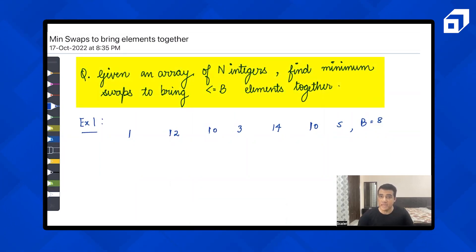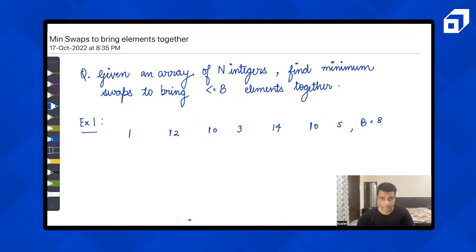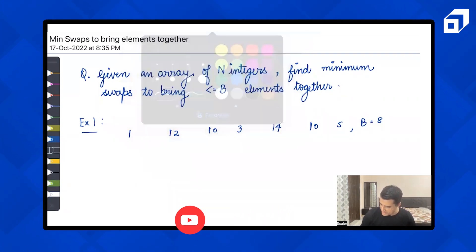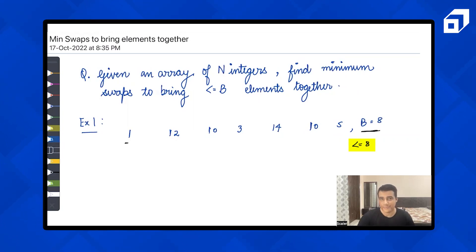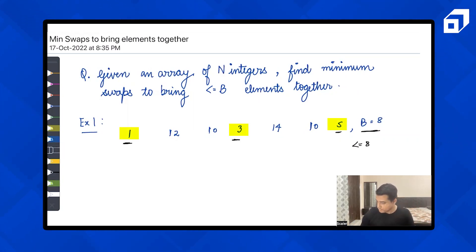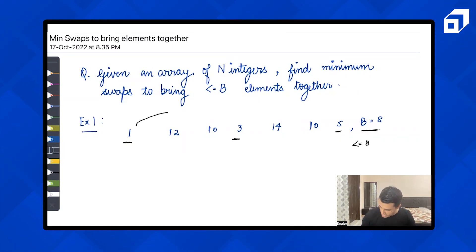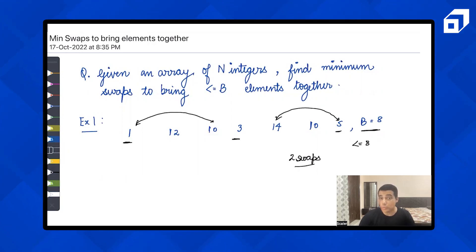The question is: given an array of integers, find the minimum swaps to bring all elements with value less than or equal to b together. For example, consider the array [1, 12, 10, 3, 14, 10, 5] with b equal to 8. The elements to bring together are 1, 3, and 5. To bring them together, a minimum of two swaps would be required.